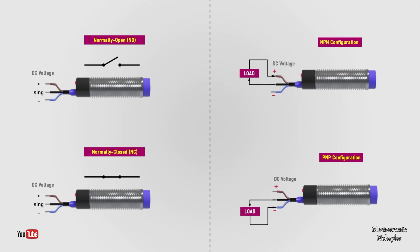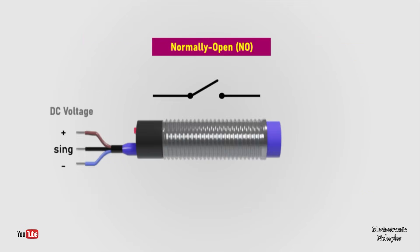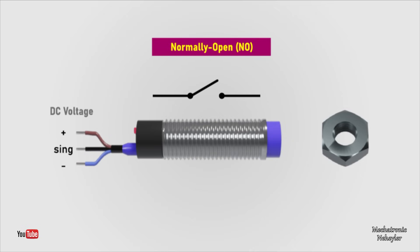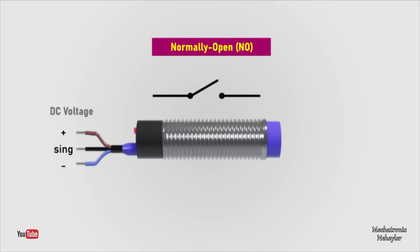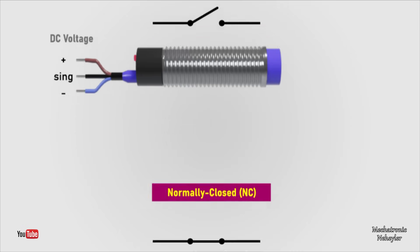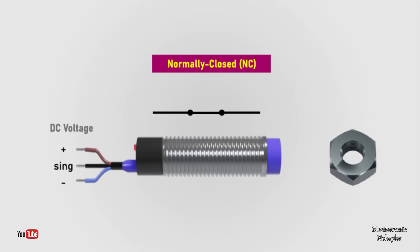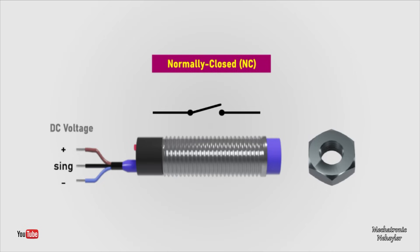There are also other settings. A sensor can be normally open or normally closed. If a metallic object approaches the normally open sensor, it detects the object and closes its contact, sending a high-level signal to its output. If a metallic object approaches the normally closed sensor, the sensor detects the object and opens its contact, sending a low-level signal to its output.